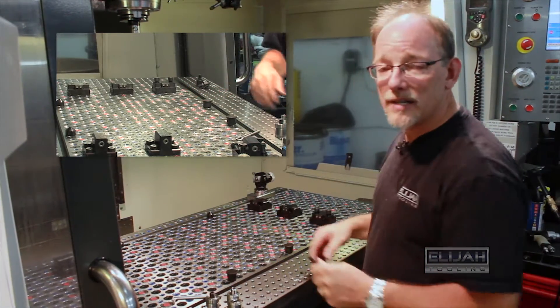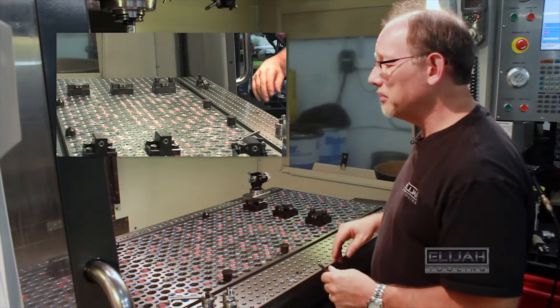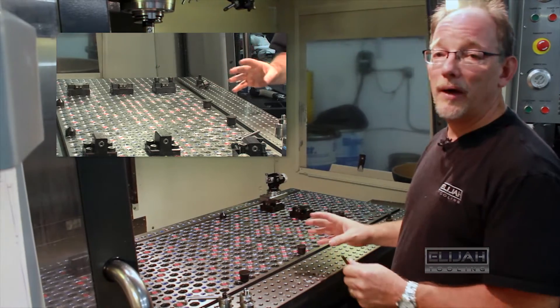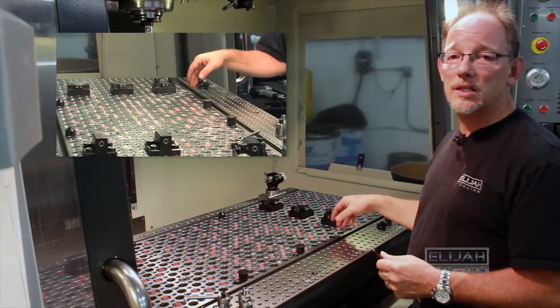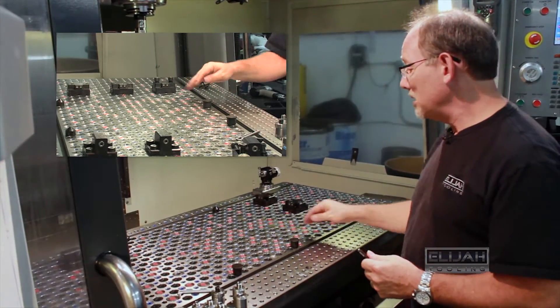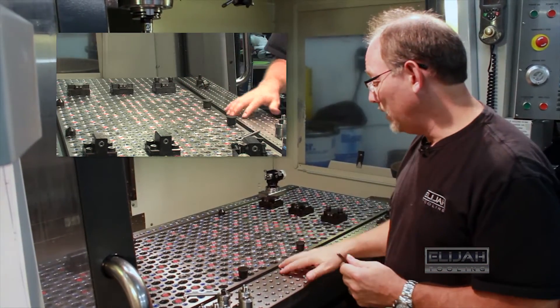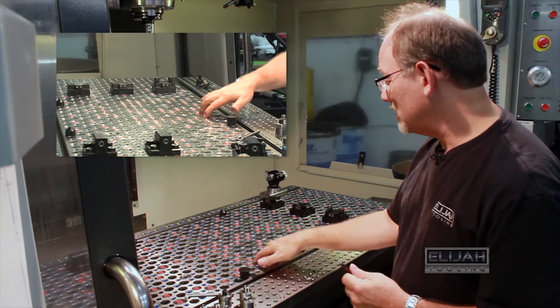That corner becomes the positive location for everything from then on. When we load up other vises, when we load up plates that are held just with the fastener, it does not matter—our zero remains in the same location. Why? Because of the precision of this modular fixture. We hold plus or minus five tenths.